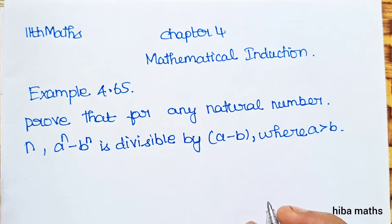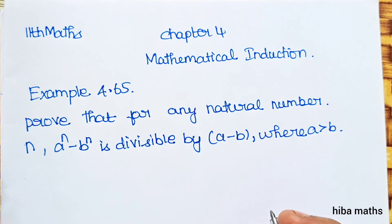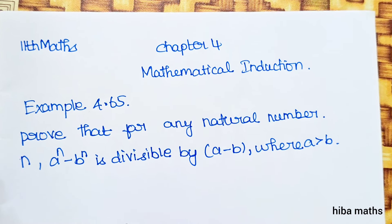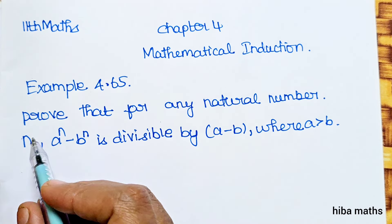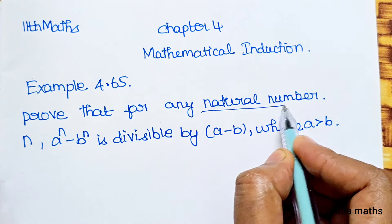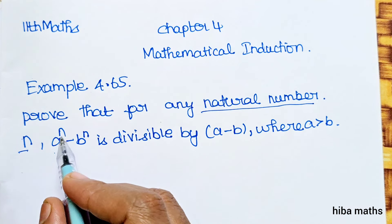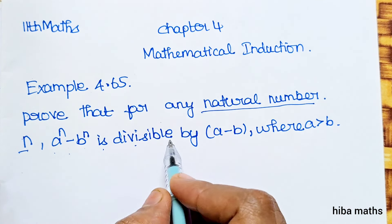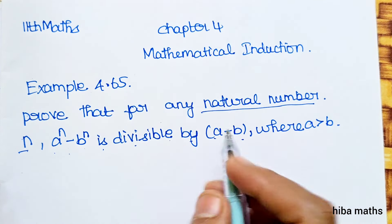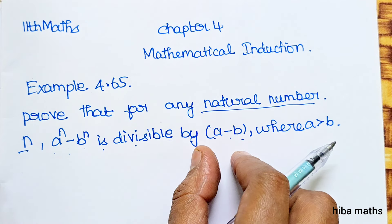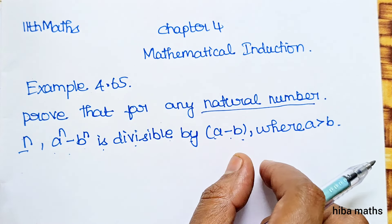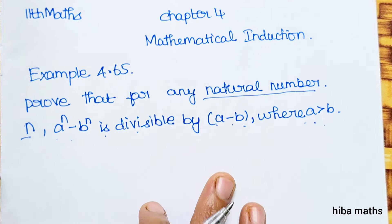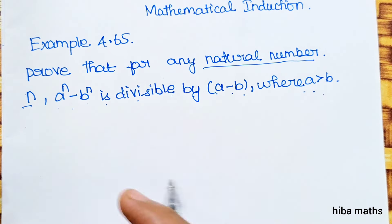Hello students, welcome to Hiba Max 11 Standard, Chapter 4 Mathematical Induction, Example 4.65. Prove that for any natural number n, a power n minus b power n is divisible by a minus b, where a is greater than b.